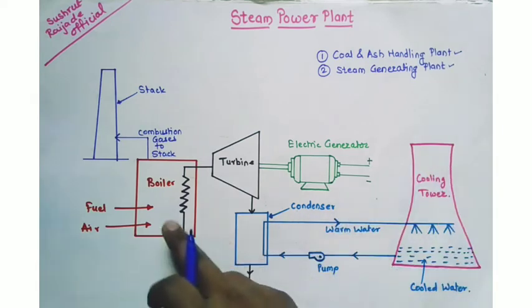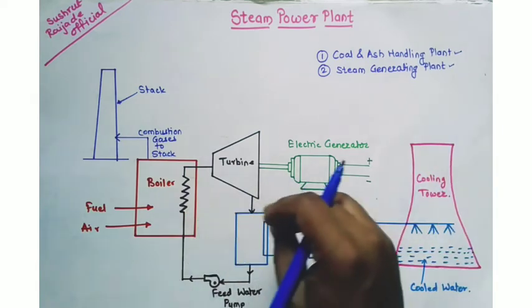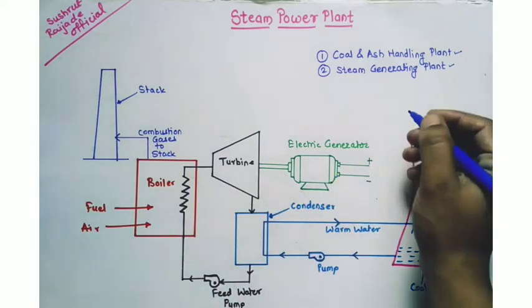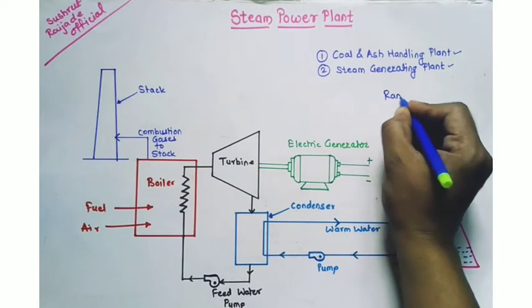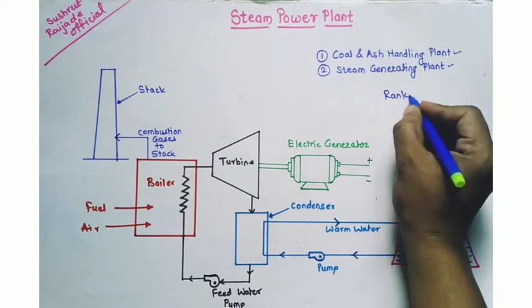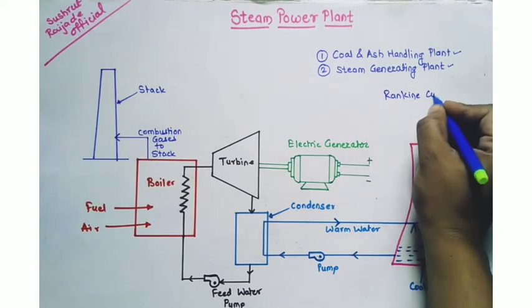A steam power station basically works on the Rankine cycle.